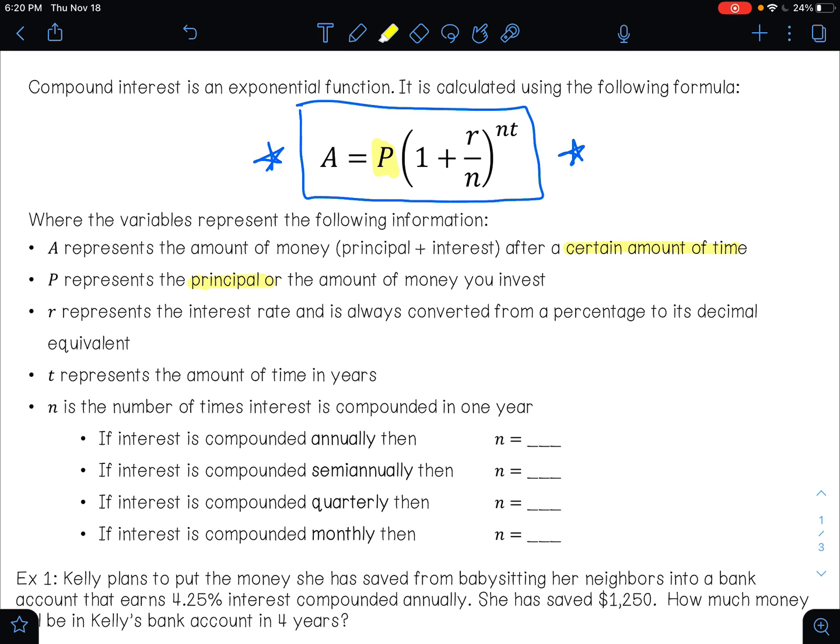r represents your interest rate and they always give you the interest rate as a percentage and you always need to convert it out of a percentage into its decimal form.